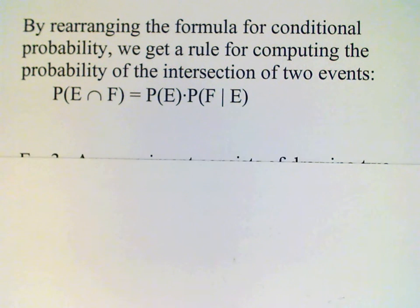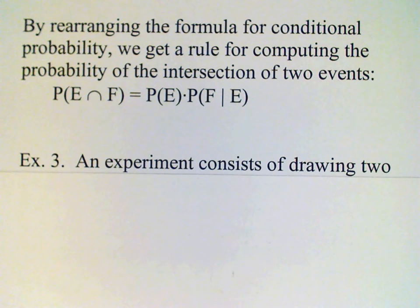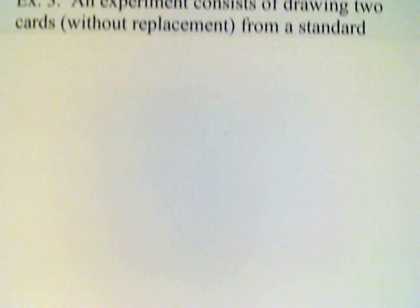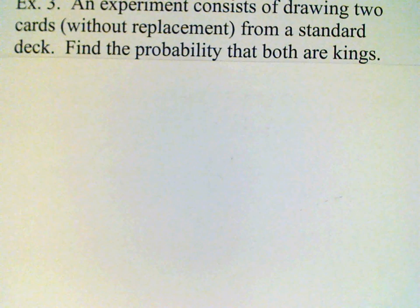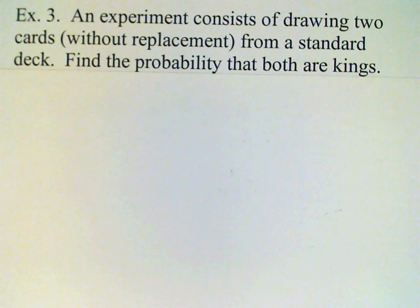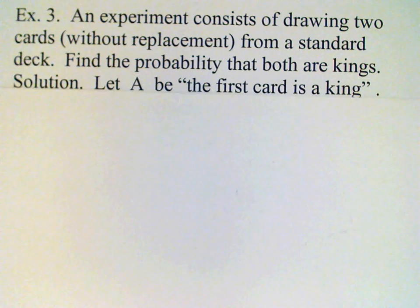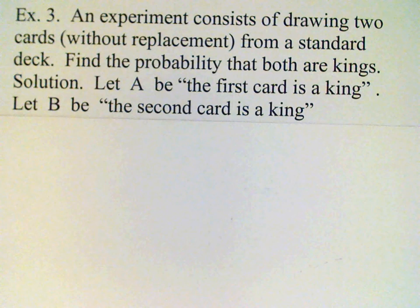This can be very helpful in finding probabilities. For example, we have an experiment consisting of drawing two cards from a standard deck, and we want to find the probability that both of these cards are kings. We'll let A be the event the first card is a king. Let B be the event the second card is a king.